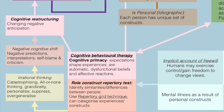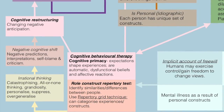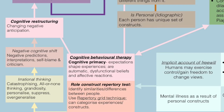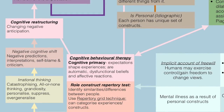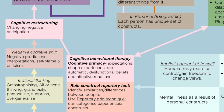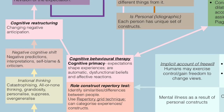An example of applying cognitive behavioral therapy involves an individual suffering from irrational thinking. Examples of irrational thinking include catastrophizing, all-or-none thinking, grandiosity, personalizing, suppressing, and overgeneralizing expectations. This can produce a negative cognitive shift where negative predictions and interpretations lead to self-blame and self-criticism. But through cognitive behavioral therapy, one can have cognitive restructuring — changing negative anticipation and making personal constructs more beneficial for the individual.